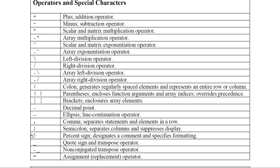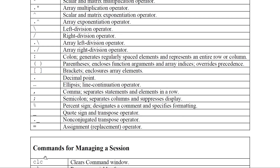The percentage sign is used to comment a line, and also for specifying format. The apostrophe is used as the transpose operator. The double equal == is used for comparison — to assign a value you use a single equal sign.